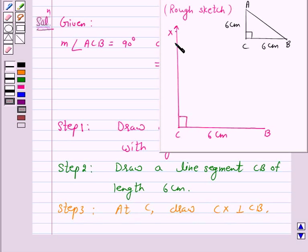Point A should be somewhere on this perpendicular. According to our rough sketch, we see that from C, the point A is at a distance of 6 cm.